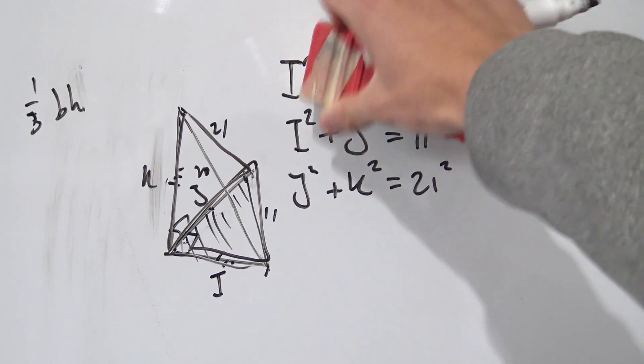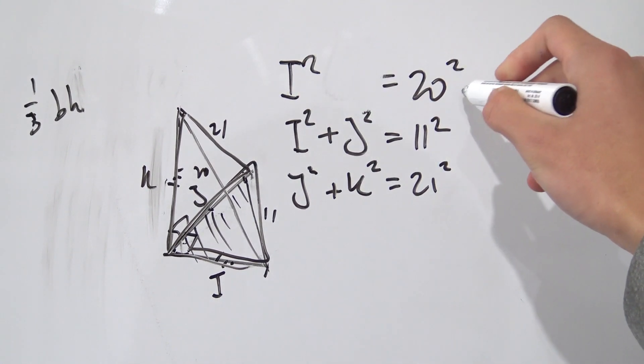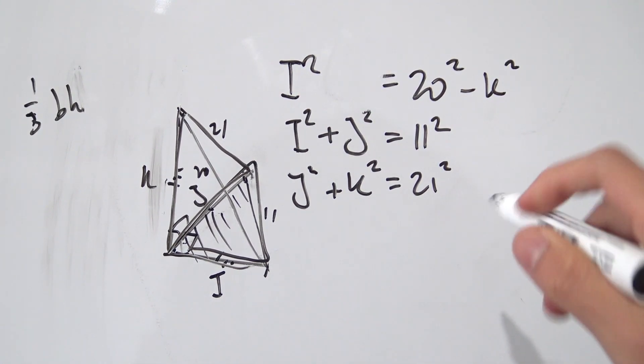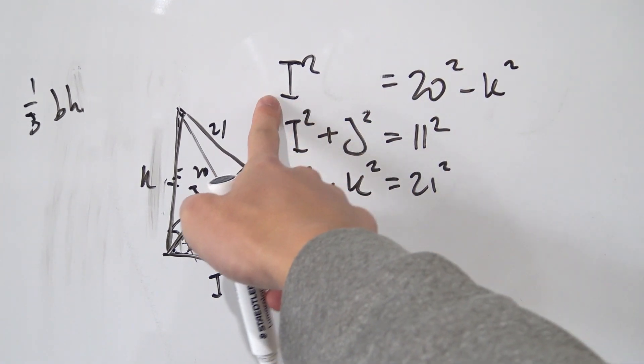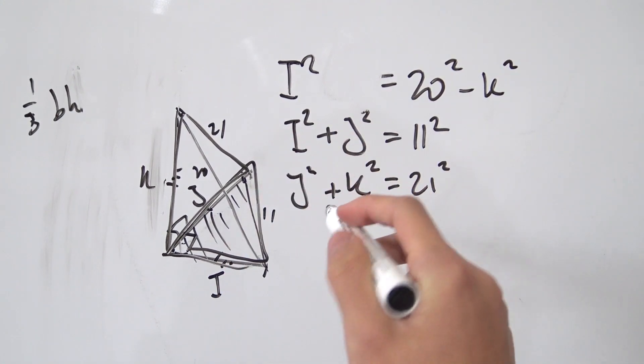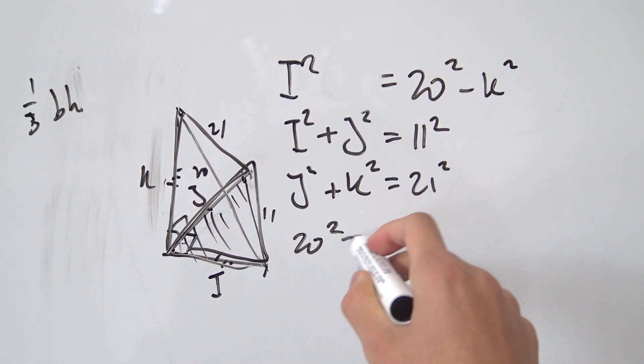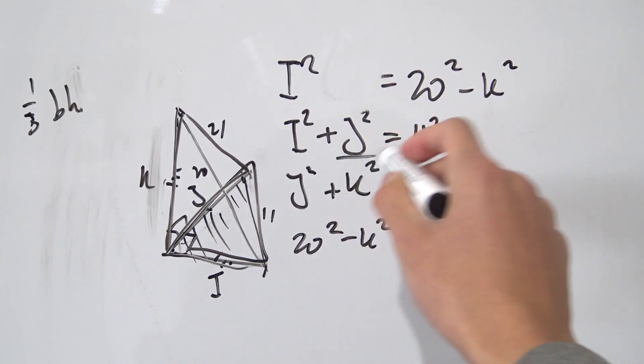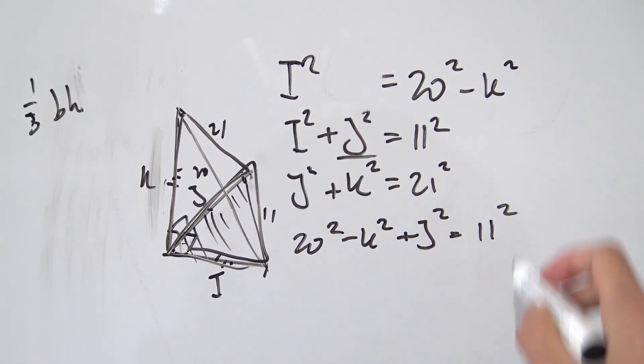Notice that we can bring this K squared onto the other side. So we're going to have 20 squared minus K squared. What else can we do? Well, notice we have I squared on its own right here. And why not substitute this part into our second equation right here? So we're going to have 20 squared minus K squared plus J squared. So this part being equal to 11 squared.